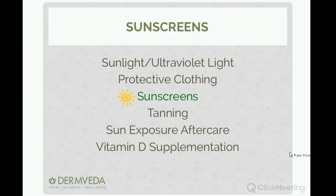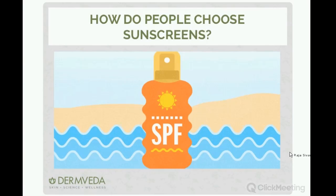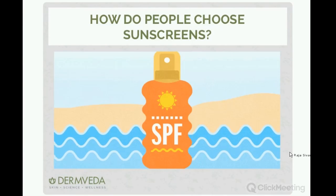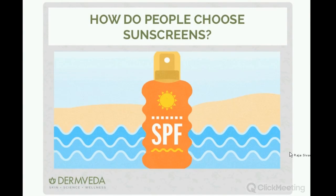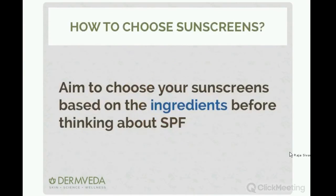Sunscreens are really important when thinking about a total sun hygiene approach. Along with protective clothing, sunscreens play a very important role. One of the most important things is how to select a sunscreen. In a large study including university community members and the general public, we asked how people pick their sunscreen. By and large — not only the general public but even medical students and physicians — people use SPF as the number one way they select a sunscreen.